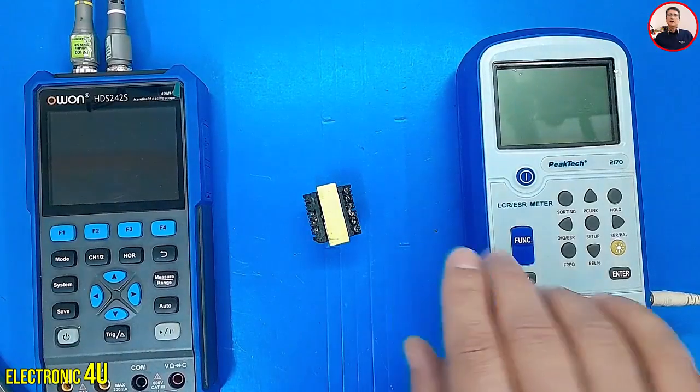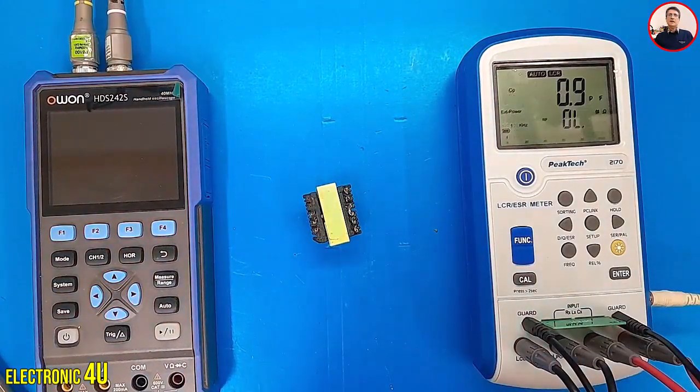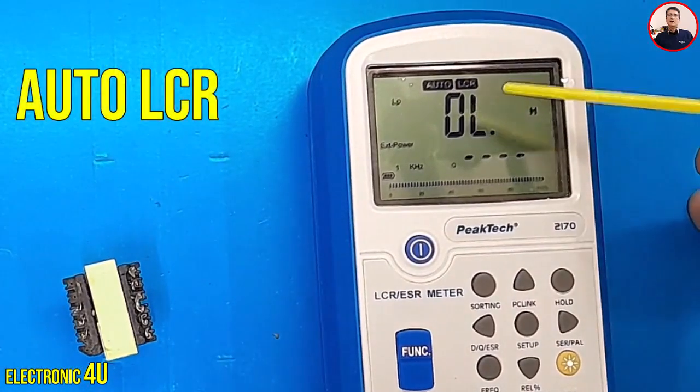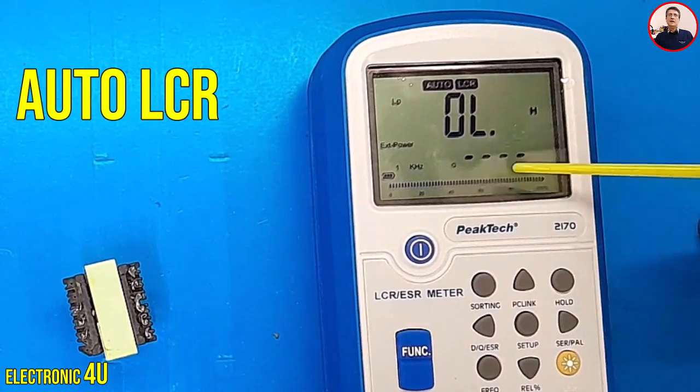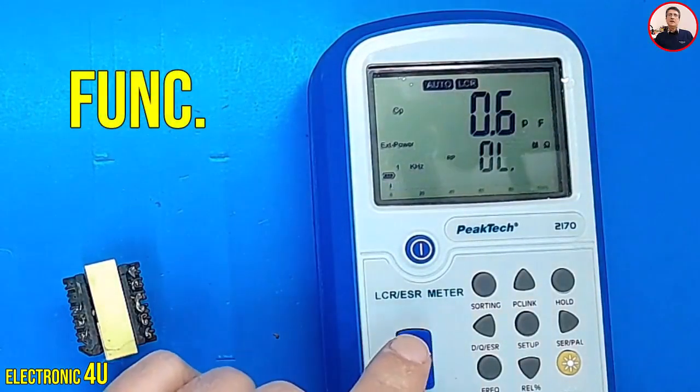First, we turn on the device. It enters the LCR mode, where secondary parameters aren't selectable. So, we press the function button.